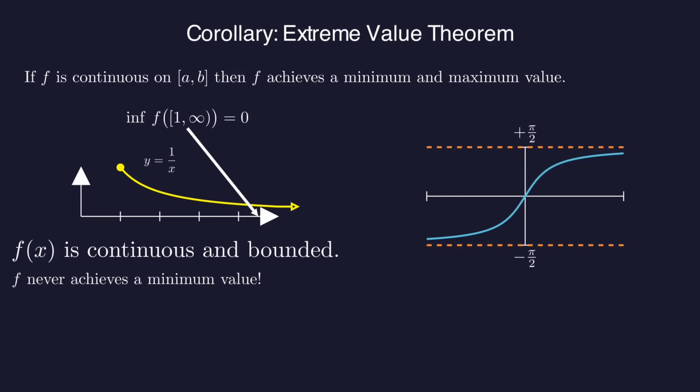In fact, pi over 2 is the least upper bound of F, and negative pi over 2 is the greatest lower bound, but neither value is actually achieved. Instead, the function gets arbitrarily close to both values. Okay, let's write out the proof to the extreme value theorem.